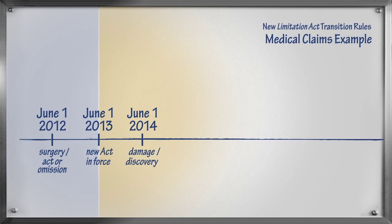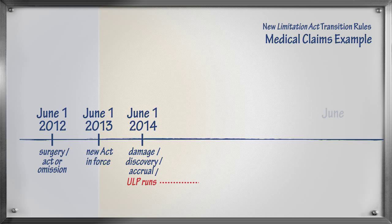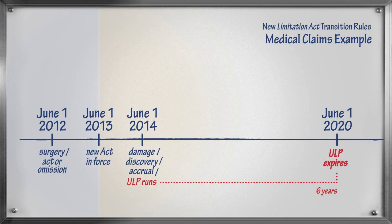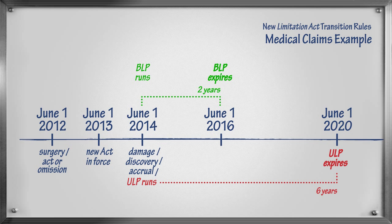Let's assume that Mary plans to sue her doctor for damages. Since this claim would have been governed by the former 6-year ultimate limitation period, the transition rules say that the 6-year ultimate limitation period will continue to apply, running from the accrual date. The accrual date is the date that all of the legal elements were present — in this case, the date that the damage occurred. So the 6-year ultimate limitation period begins on June 1, 2014. The transition rules also tell us that the 2-year basic limitation period under the new act applies, running from discovery. So Mary will have 2 years, beginning June 1, 2014, to sue her doctor.